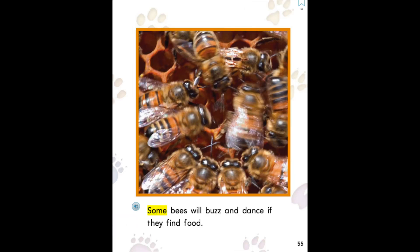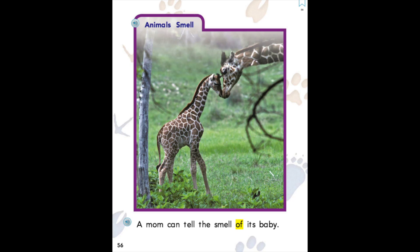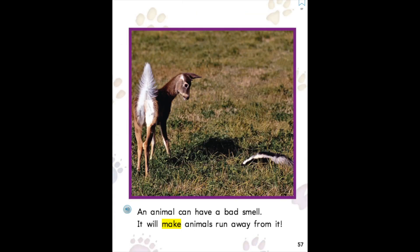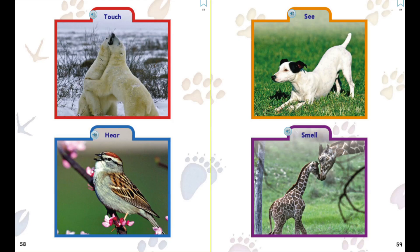Some bees will buzz and dance if they find food. A mom can tell the smell of its baby. An animal can have a bad smell. It will make animals run away from it. Each picture shows how animals touch, hear, see, and smell.